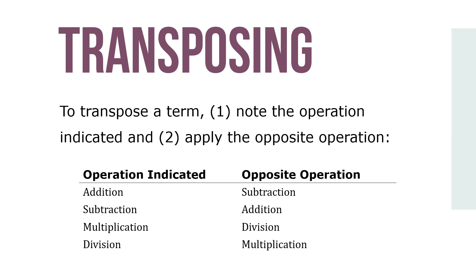Transposing involves the use of inverse or opposite operations. To transpose a term in an equation, note the operation indicated and apply the opposite operation to both sides of the equation as follows. If the operation indicated is addition, use subtraction. If it's subtraction, use addition. If it's multiplication, use division. And if it's division, use multiplication.